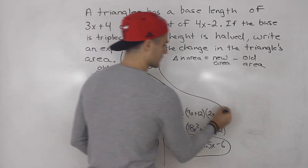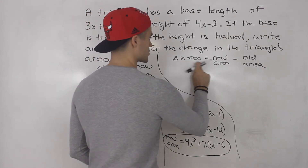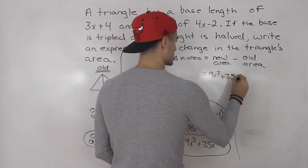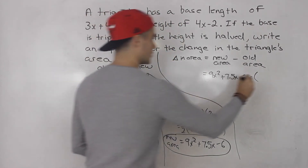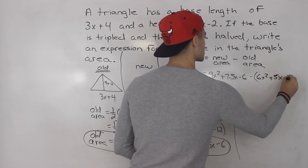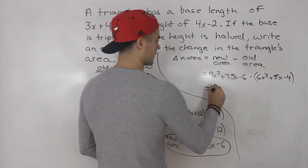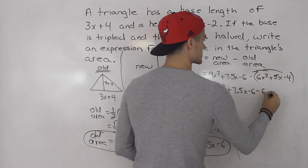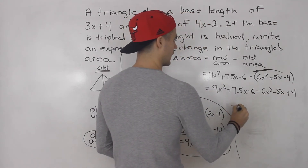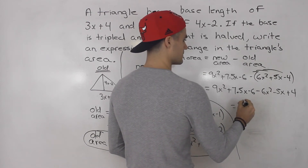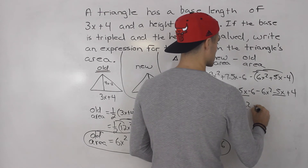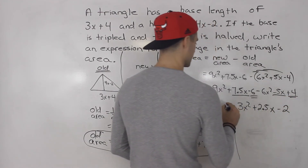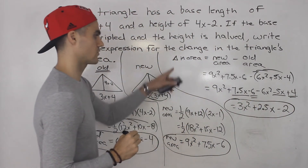Now we can find the expression for the change in area, which is the new area minus the old area: (9x squared plus 7.5x minus 6) minus (6x squared plus 5x minus 4). Distributing the negative gives minus 6x squared minus 5x plus 4. Combining like terms: 9x squared minus 6x squared is 3x squared, 7.5x minus 5x is 2.5x, and minus 6 plus 4 is minus 2. So the final answer is 3x squared plus 2.5x minus 2.